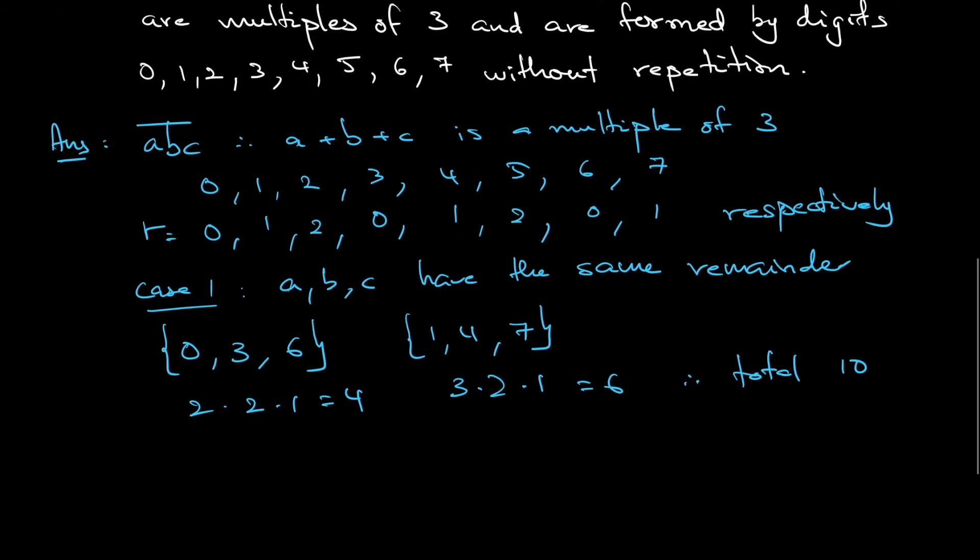For case 2, it is when a, b, c have different remainders. So what I mean by this is, let's say a remainder 0, b remainder 1, c remainder 2 - add up together still divisible by 3. So it can be 0, 1, 2 or 1, 2, 0 or 2, 0, 1.